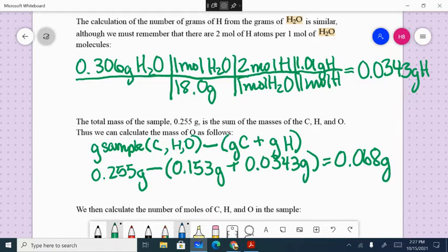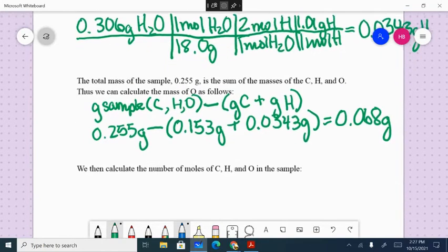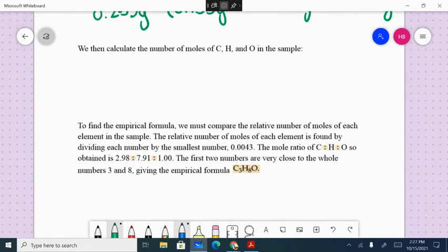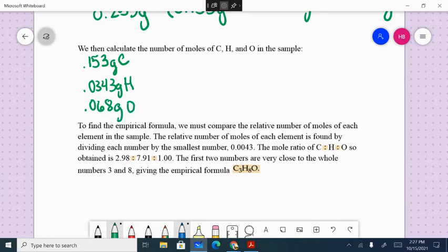Now that we have the grams of each of our elements, we had to change them to moles first to figure out the grams. Now we have to change them back to moles in order to be able to compare them. So the moles of carbon are going to be, let's list our grams first. 0.153 grams of carbon were produced. 0.0343 grams of hydrogen were produced. And 0.068 grams of oxygen were produced. I'm going to change them to moles by dividing by the molar mass.